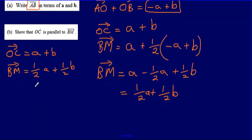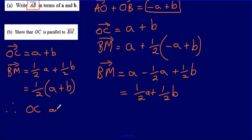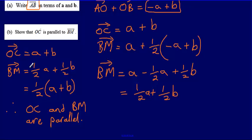To show that they are parallel, I take the factor of a half out of vector BM, giving half of (a plus b). Therefore OC and BM are parallel, since BM is a scalar multiple of OC. We can also say that the magnitude of BM is half the magnitude of OC — they go in the same direction, but BM is half the distance. Therefore, OC and BM are parallel.